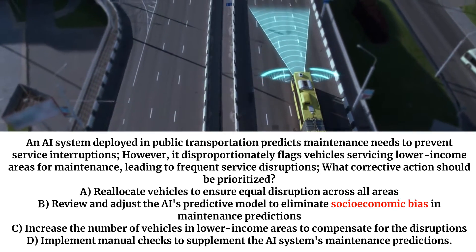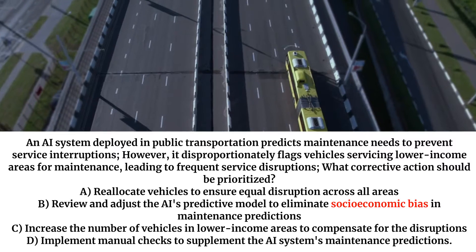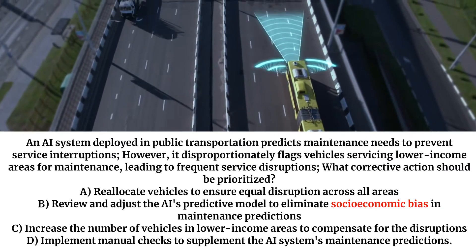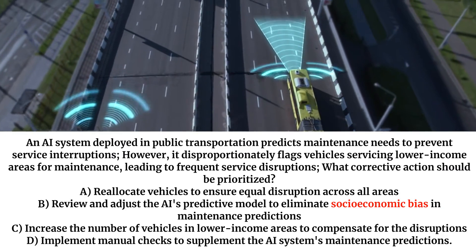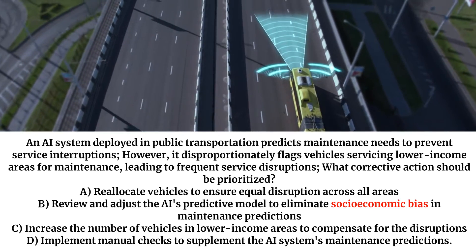A. Reallocate vehicles to ensure equal disruption across all areas. B. Review and adjust the AI's predictive model to eliminate socioeconomic bias in maintenance predictions. Correct answer: B. Review and adjust the AI's predictive model to eliminate socioeconomic bias in maintenance predictions.